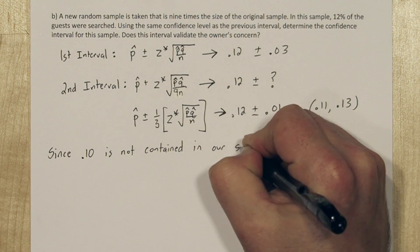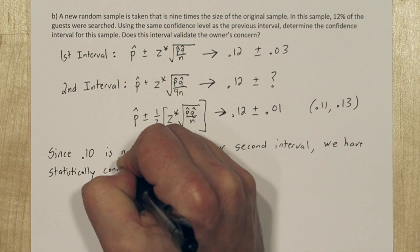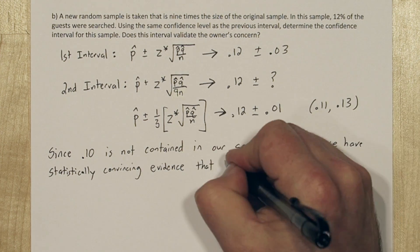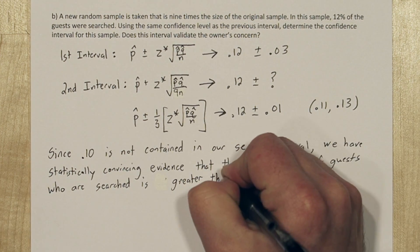Since 0.10 is not contained in our second interval, we have statistically convincing evidence that the true proportion of guests who are searched is greater than 10%. So this does validate the owner's concern.